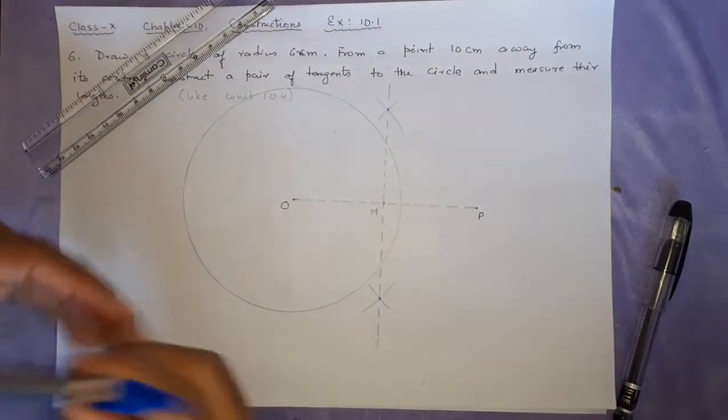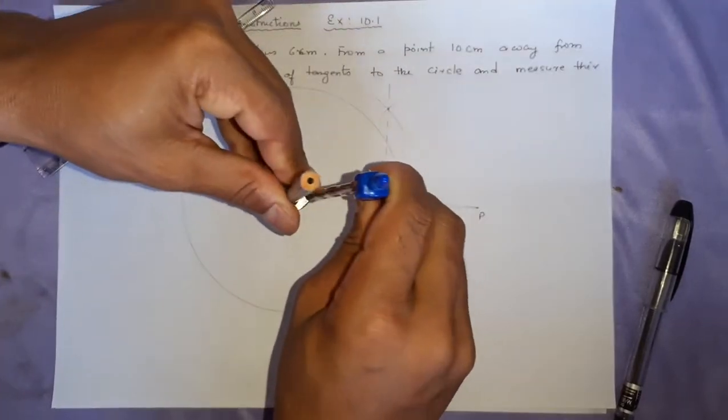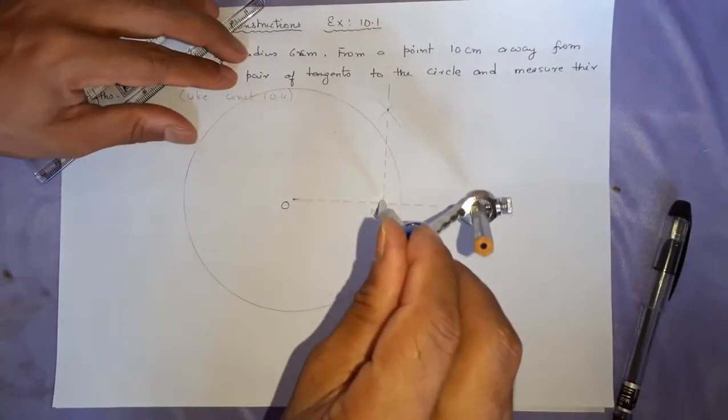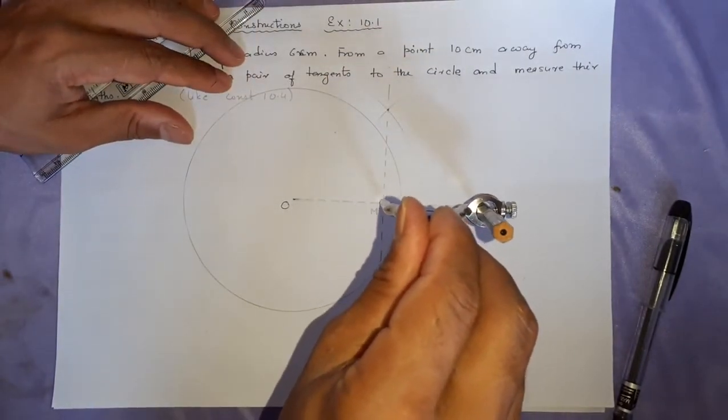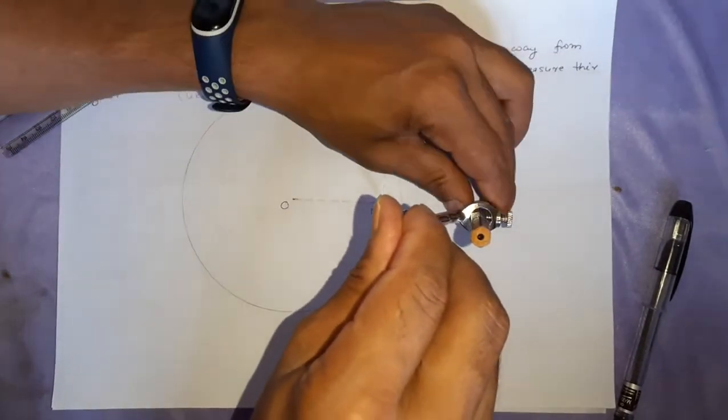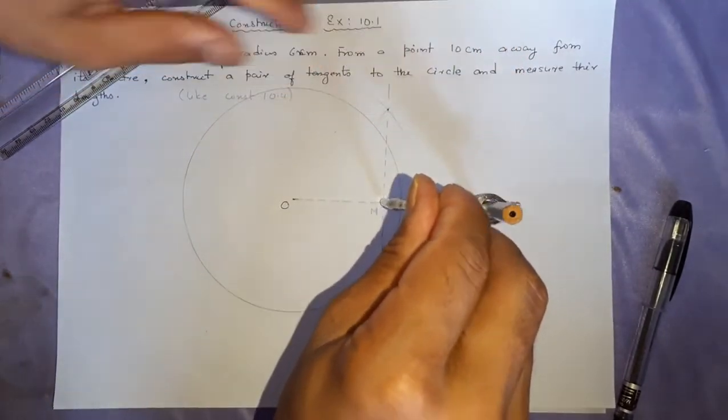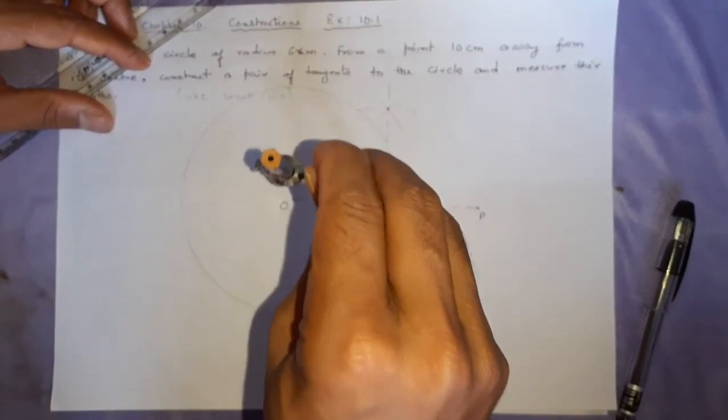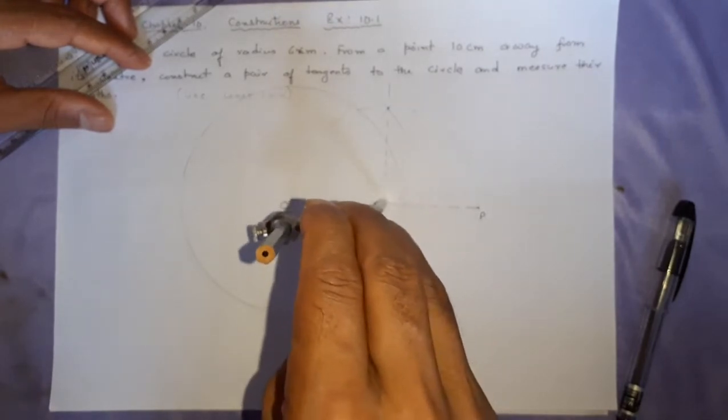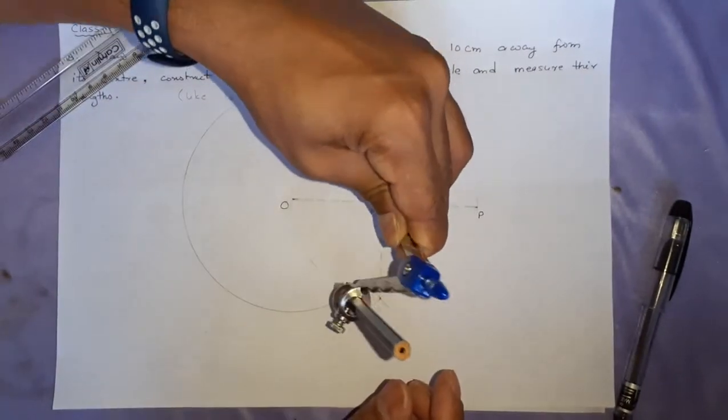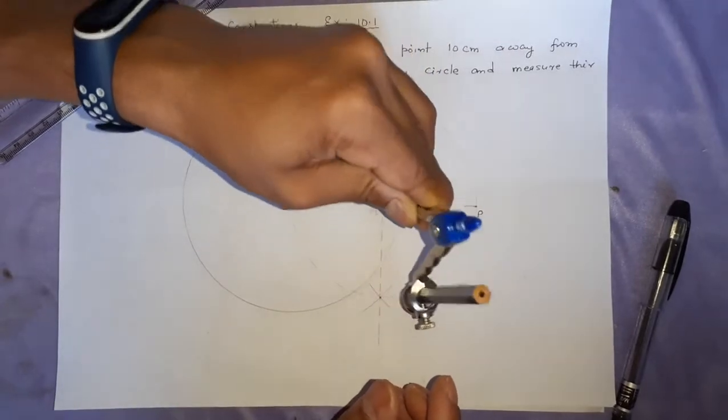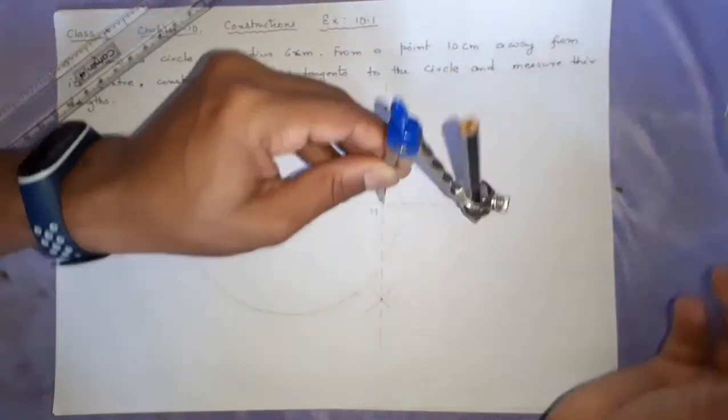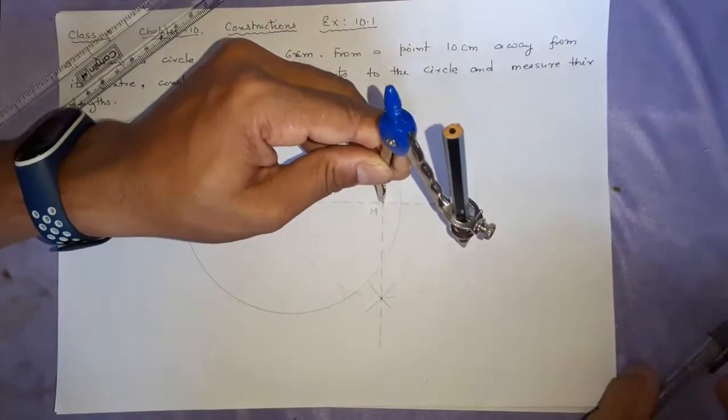Now, from the M as the center and OM as a radius, you can call it OM or you can also call it MP. They are same because they are of the same line, half each other. Make sure that it cuts the circle. Here it cuts the circle. Here it cuts the circle. It is done.